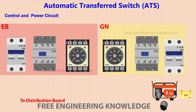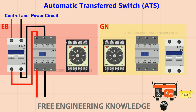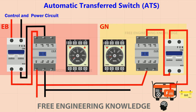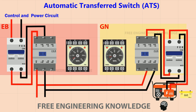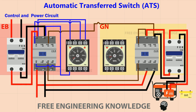Now let's look at the power circuit, control circuit, and how it works. The power circuit of the automatic transfer switch is shown, along with the EB side control circuit, the generator power side control circuit, and the generator on/off control circuit.